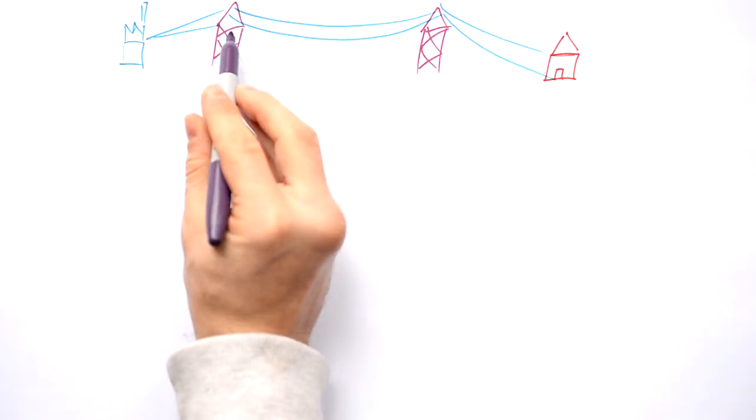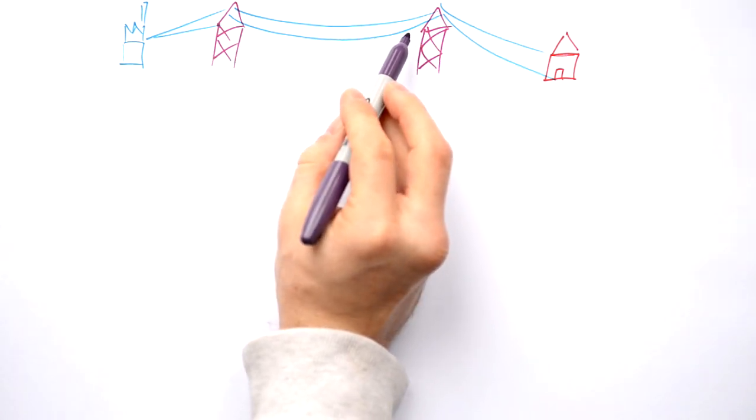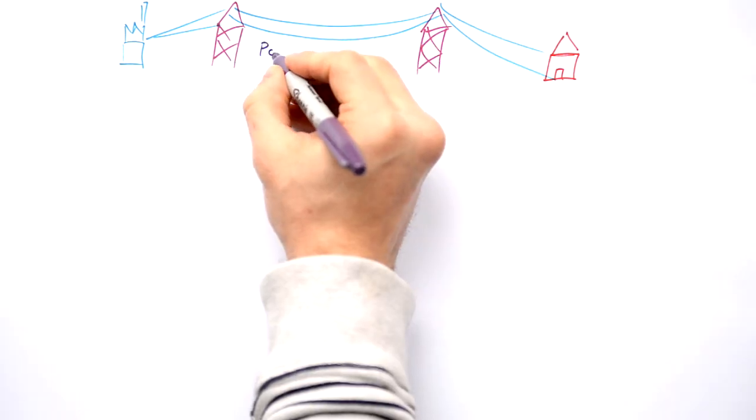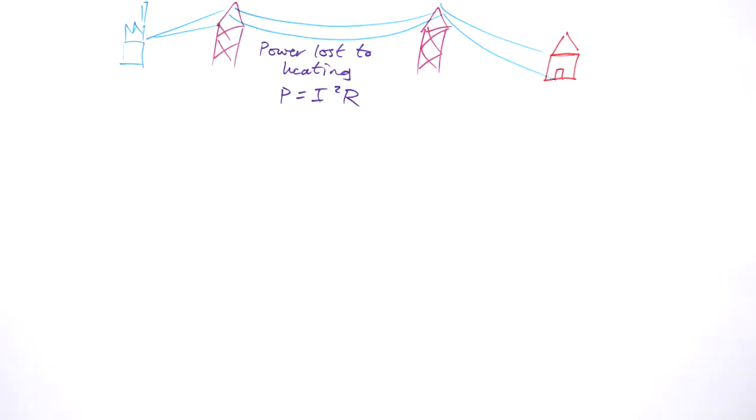Problem is that because these wires, even though they're very low resistance, they still have a resistance, and the power lost to heating equals I squared R, the current squared times the resistance of the wires.